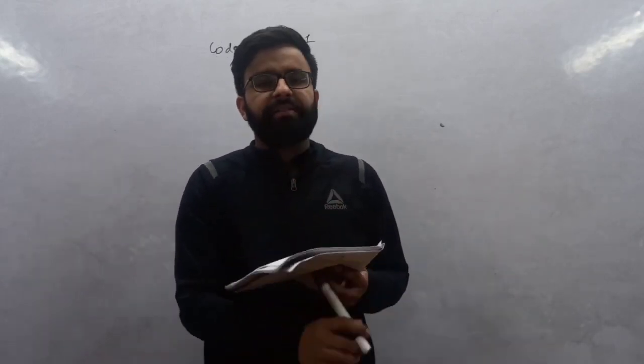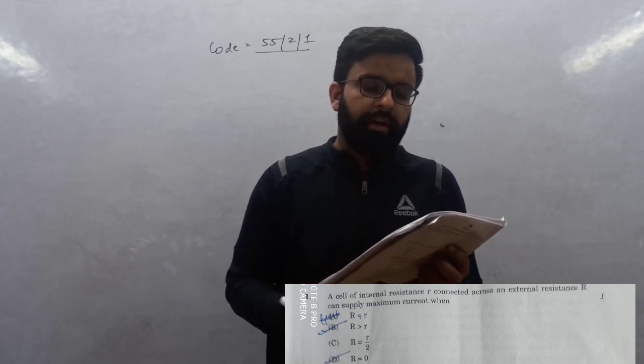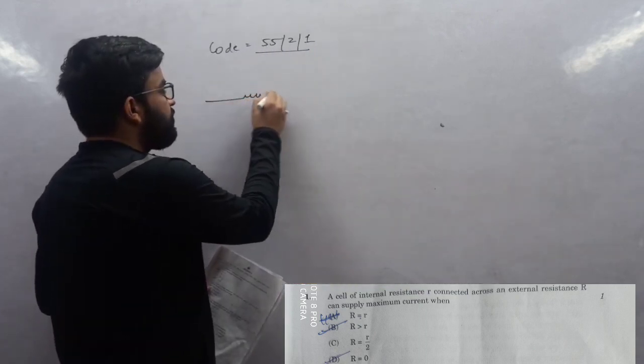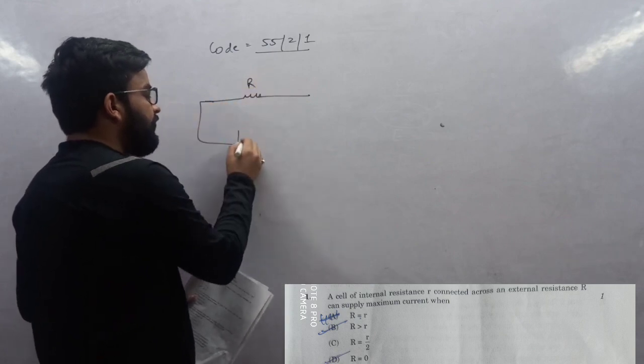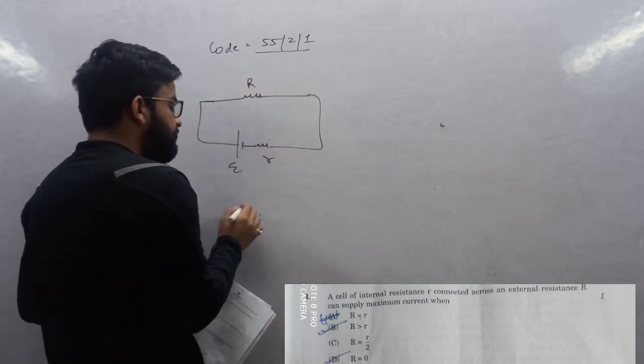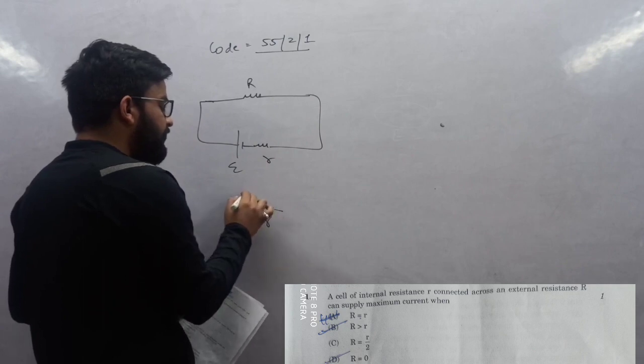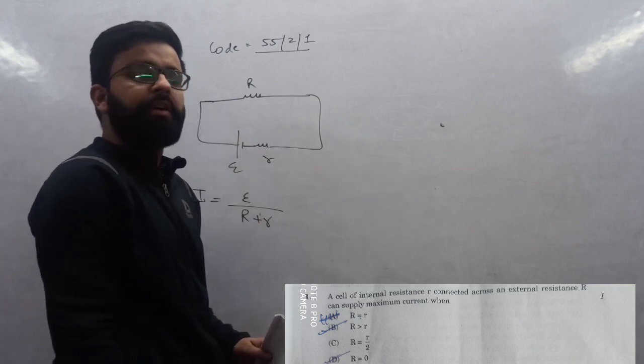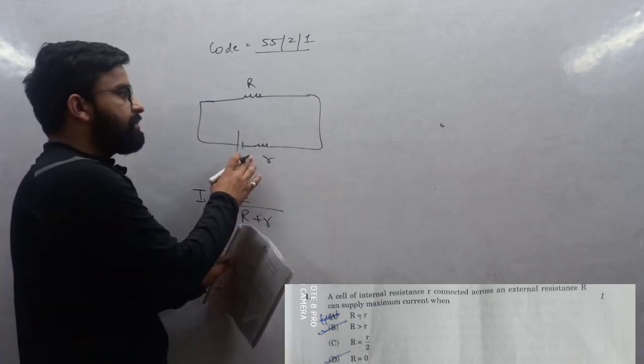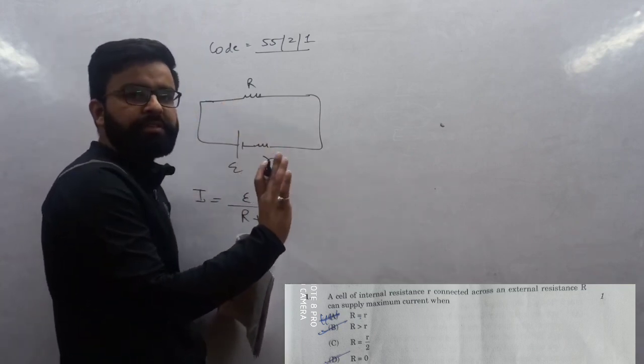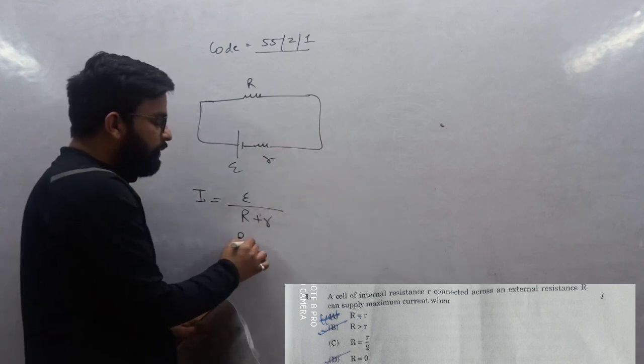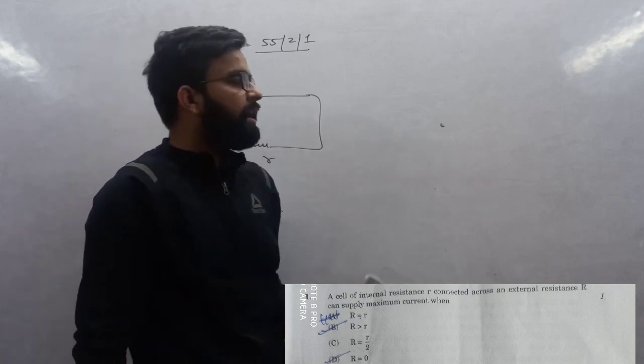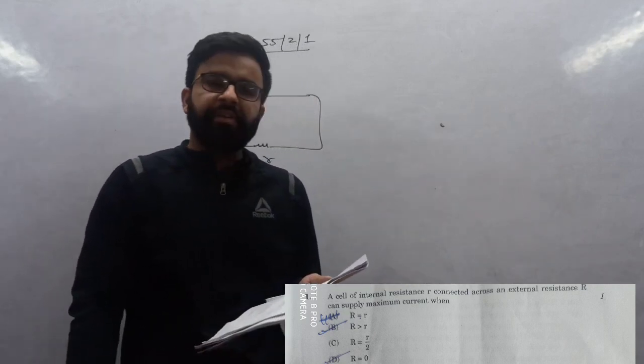Question 1: A cell of internal resistance r connected across external resistance R can supply maximum current. External resistance R, battery EMF is E, internal resistance small r. Total resistance becomes r plus R. Current is E/(r+R). To make current maximum, denominator should be as small as possible. To minimize it, we change external resistance. Internal resistance we cannot change. To minimize, its value should be zero. So answer is R equals zero.